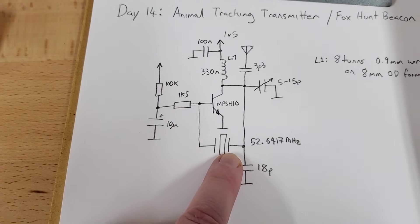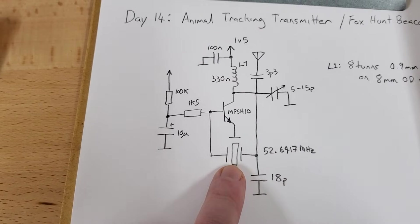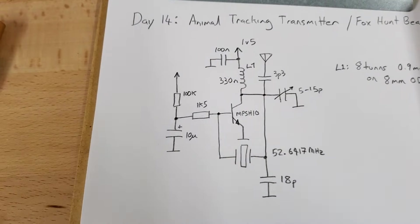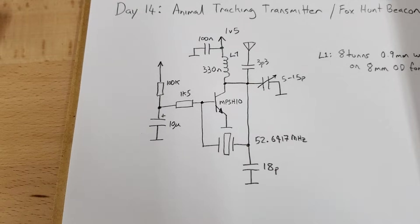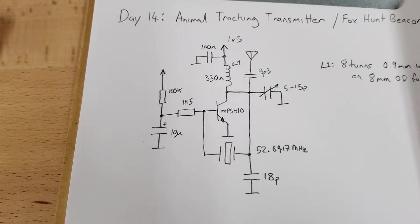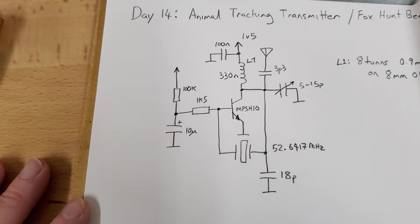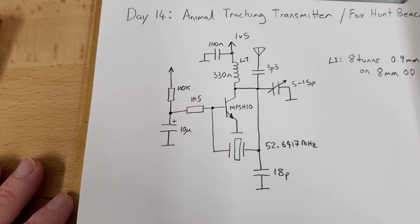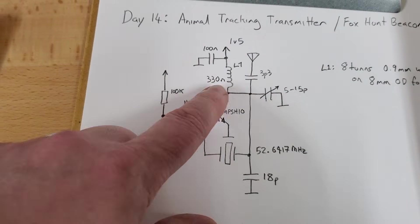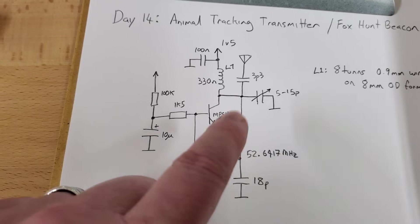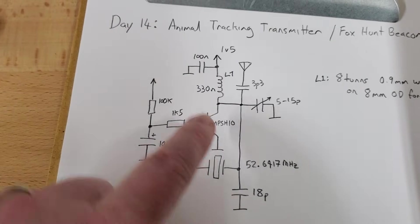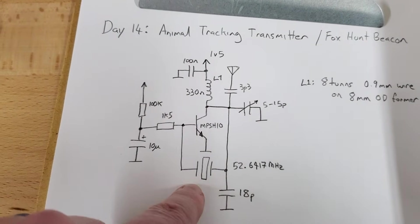I have a 52.6417 MHz crystal, which I happen to have, and it's in a band that I'm allowed to transmit on. If you're not, you might want to use a 27 MHz crystal or use it in overtone mode. This is actually probably an overtone crystal anyway, but I didn't sweep the crystal.